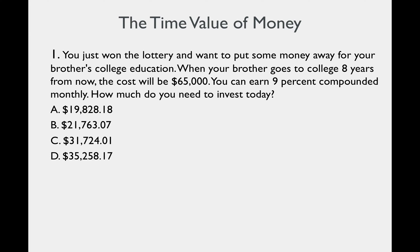You just won the lottery and want to put some money away for your brother's college education. When your brother goes to college 8 years from now, the cost will be $65,000. You can earn 9% compounded monthly — how much do you need to invest today?